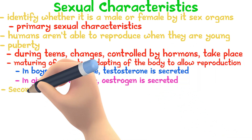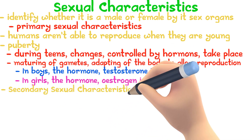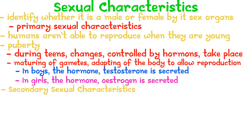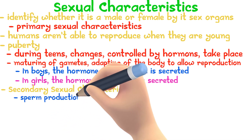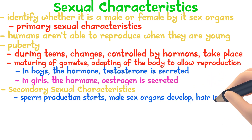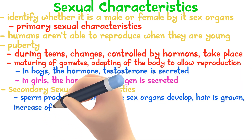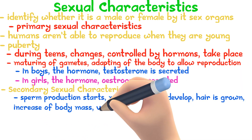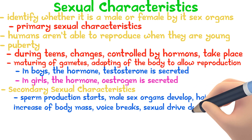Secondary sexual characteristics during puberty in boys include: sperm production starts, male sex organs are developed, hair is grown in many places, increase in body mass, voice breaks, and the sexual drive develops.